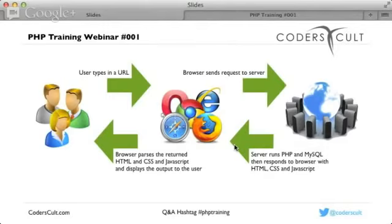To recap: the user types in a URL on a browser. The browser sends a request to the server. The server runs PHP and MySQL, which responds to the browser with HTML, CSS, and JavaScript — a language the browser understands. The browser runs the HTML, CSS, and JavaScript to display the final output to the user.